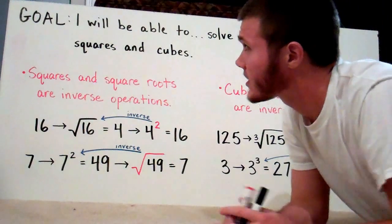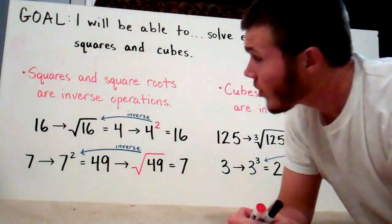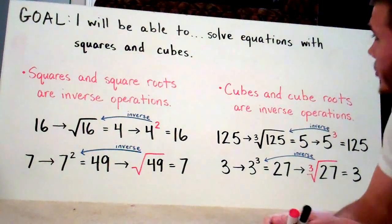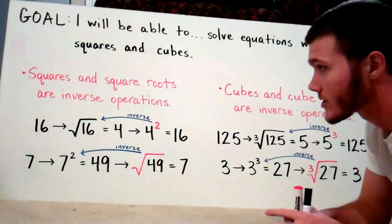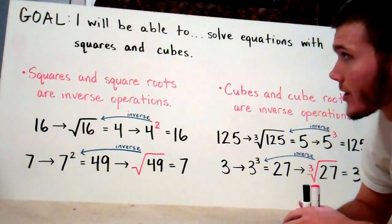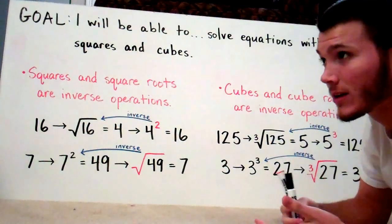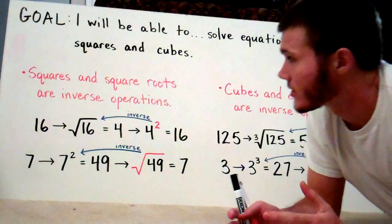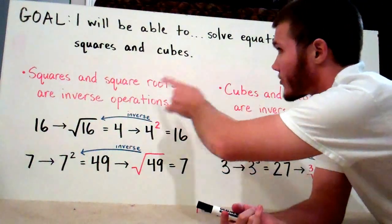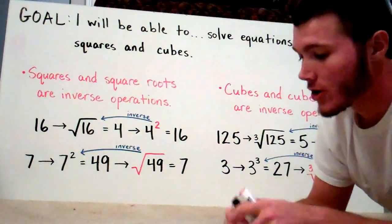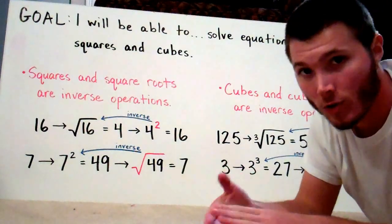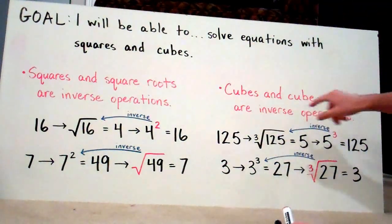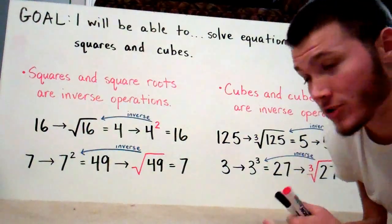Alright, what's happening class? The goal for you guys today is for you to be able to solve equations with squares and cubes. So really what you're going to have to learn is just these two things I have in red: squares and square roots are inverse operations, and cubes and cube roots are inverse operations — and here's why.